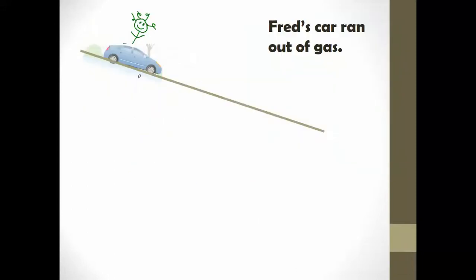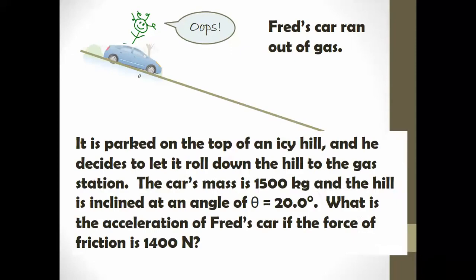Now we shift to another problem: an object on an incline. Fred has parked his car and it has run out of gas. It's parked at the top of an icy hill, so there's friction but not a very strong amount. He decides to let it roll down the hill to the gas station. The car's mass is 1,500 kilograms, the hill is inclined at 20 degrees, and the force of friction is 1,400 newtons. What is the acceleration?